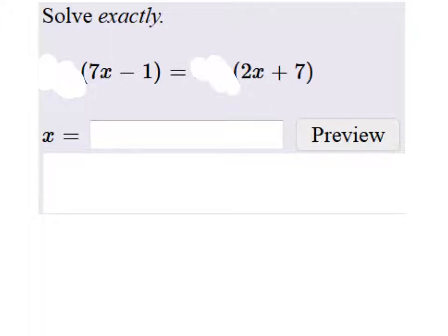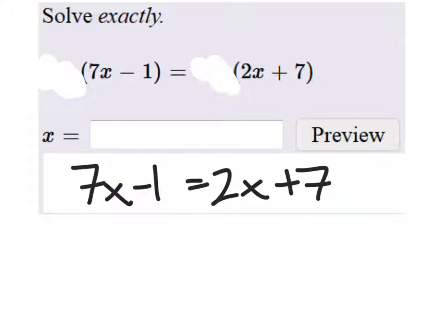So if we rewrite this, we have 7x minus 1 equals 2x plus 7, and from here we're just solving an equation.